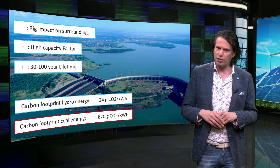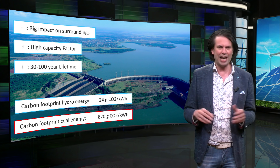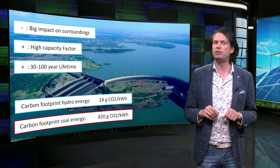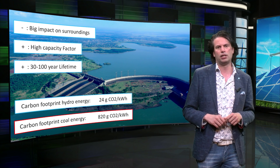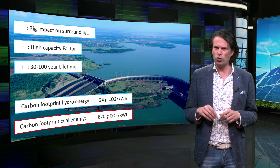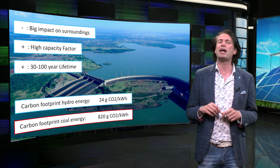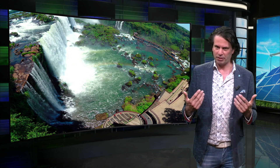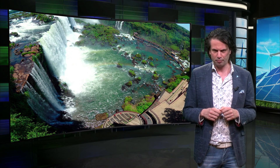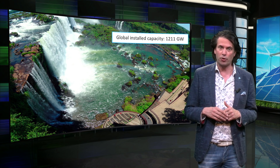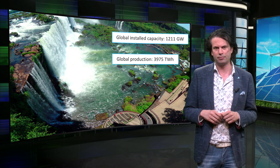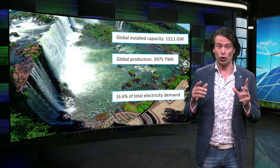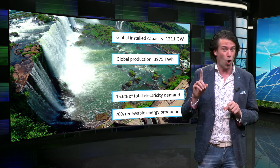However, the carbon footprint of hydropower does greatly depend on each individual project. There are a few major factors that have to already be in place before hydropower can be considered. The most important factor is the availability of water and a natural height difference. Also the environmental impact of a hydropower plant should be taken into account. Because of the necessity of a natural feature that allows for easy implementation of hydropower and the impact on the surroundings of a dam, the global potential of new hydropower is relatively limited. In 2015, the estimated global installed capacity was 1211 GW, producing approximately 3975 TWh of electricity.